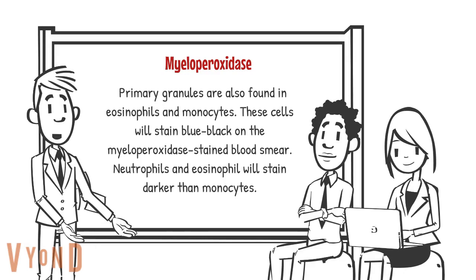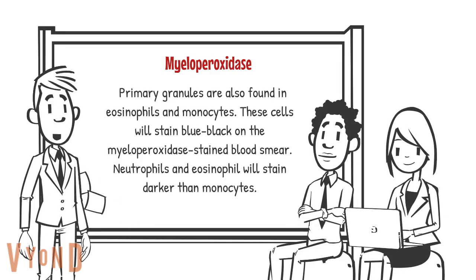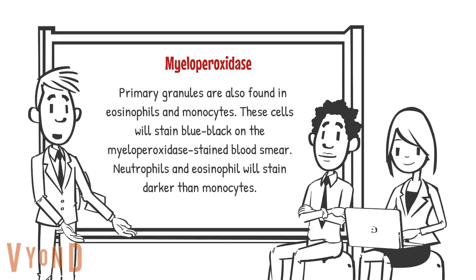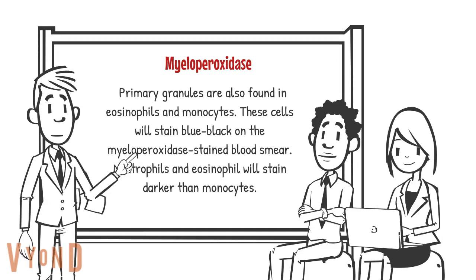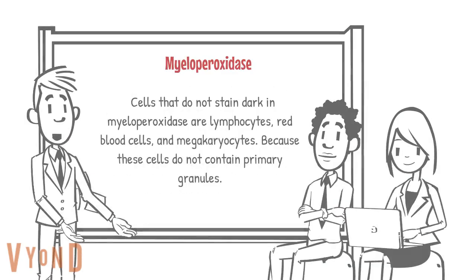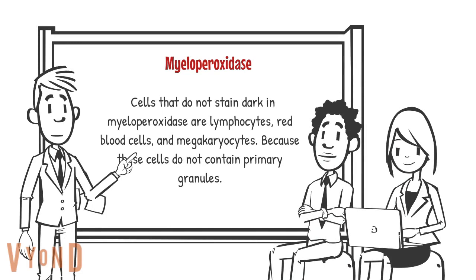Primary granules are also found in eosinophils and monocytes. These cells will stain blue-black on the myeloperoxidase-stained blood smear. Neutrophils and eosinophils will stain darker than monocytes.